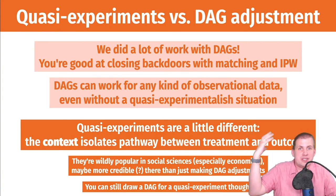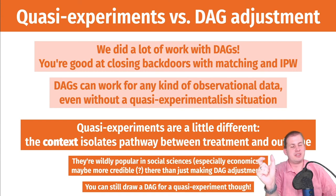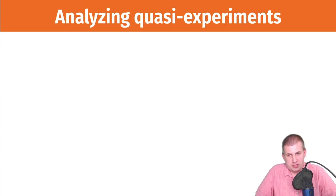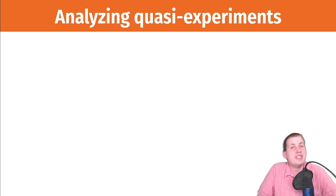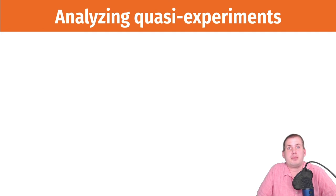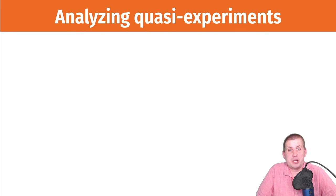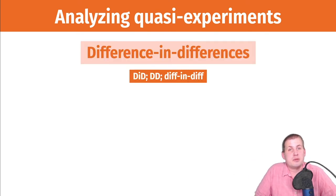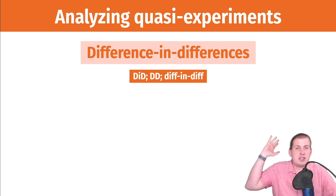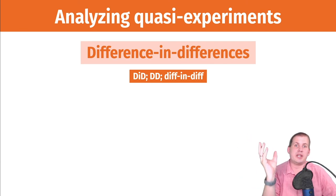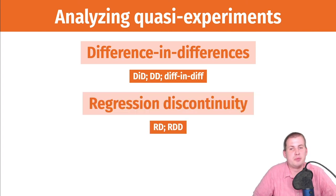With matching and inverse probability weighting, you don't need to wait for some experimental-type situation to appear in nature. There are generally three types of quasi-experiments — three general categories — which is what we'll cover for the next three topics in this section of the course. You'll also see these throughout economics, policy, and political science papers. The first is difference-in-differences, which is what we're covering this week, often abbreviated as DiD, DD, or diff-and-diff — all meaning the same thing.